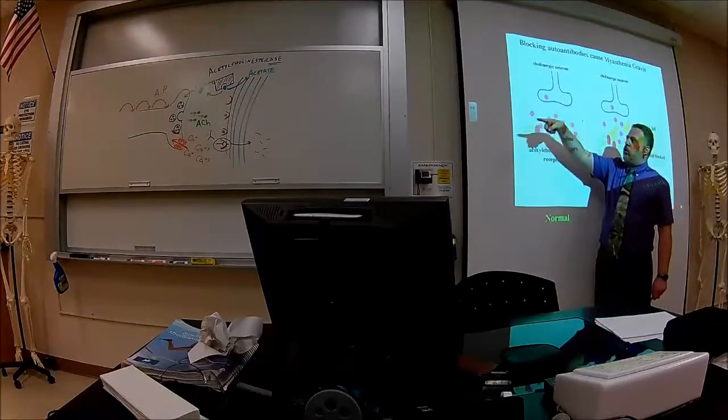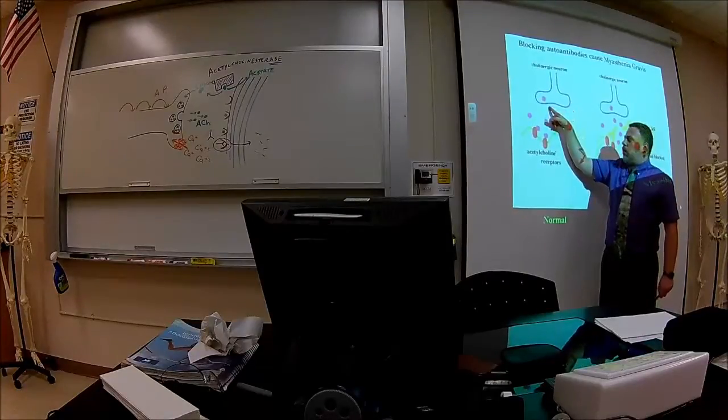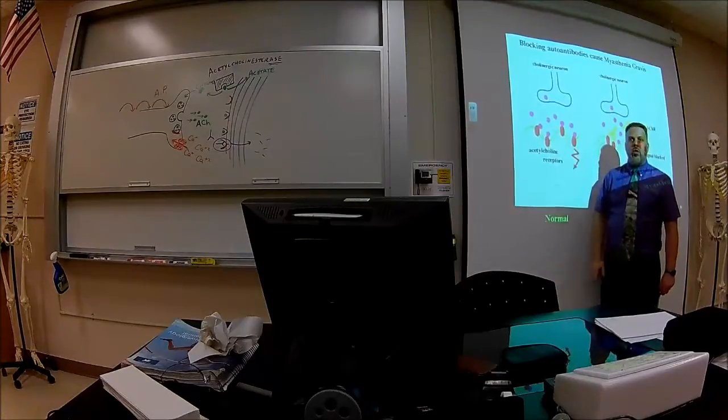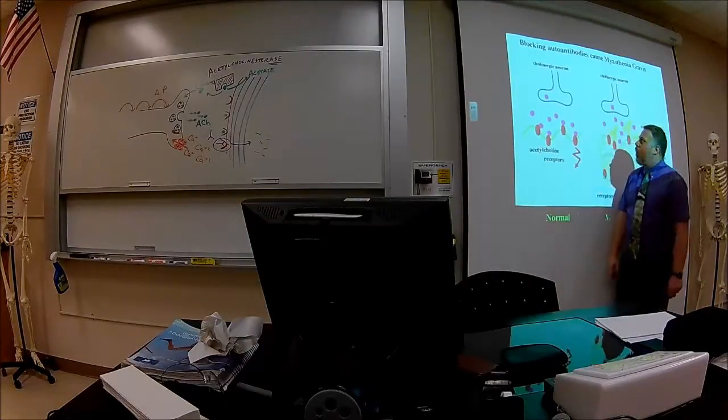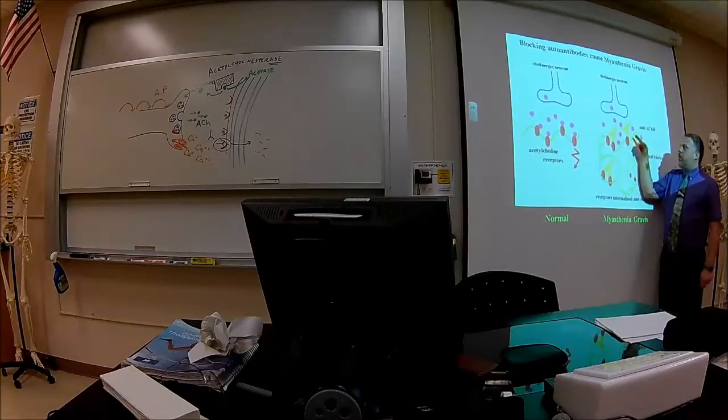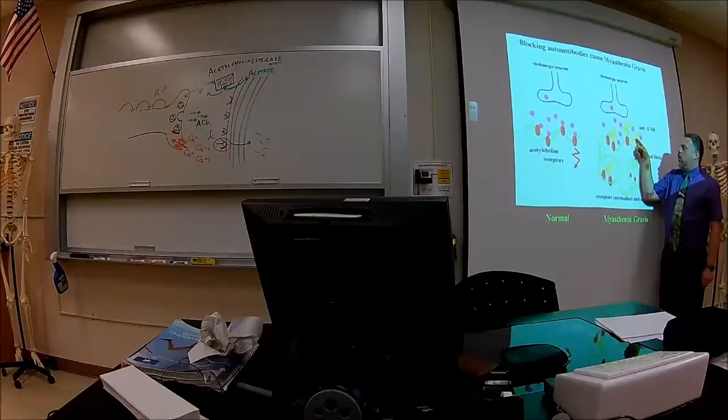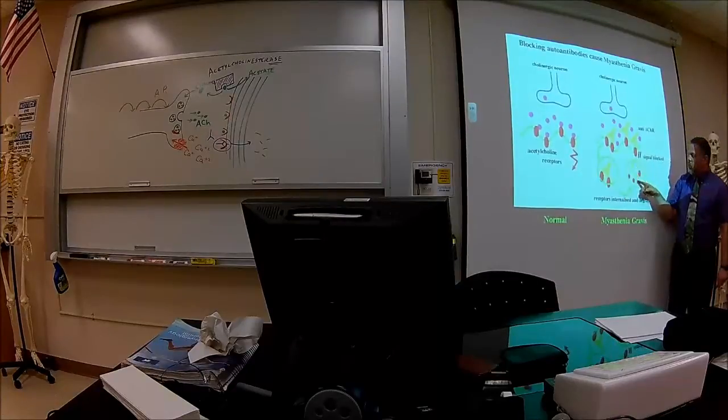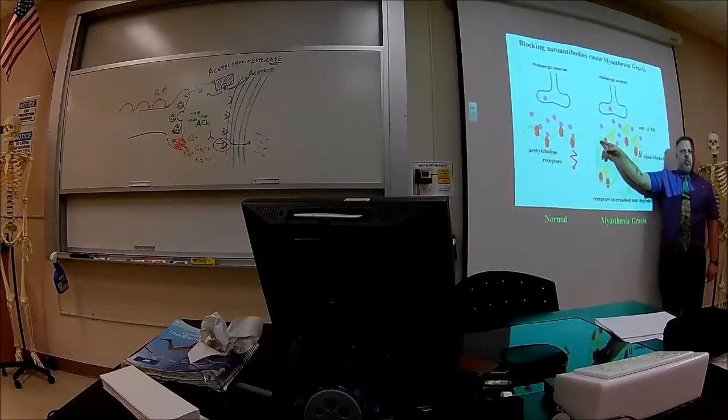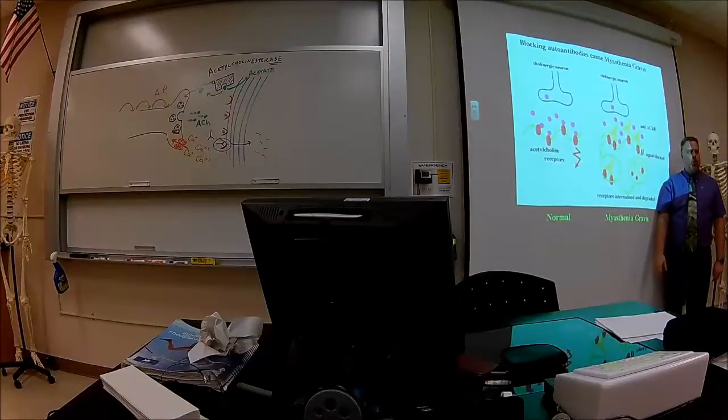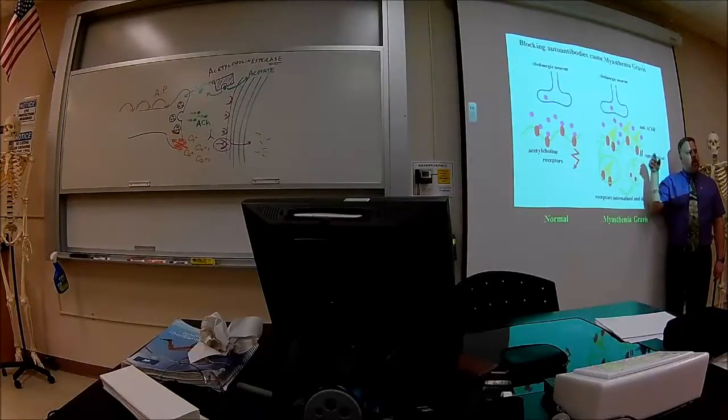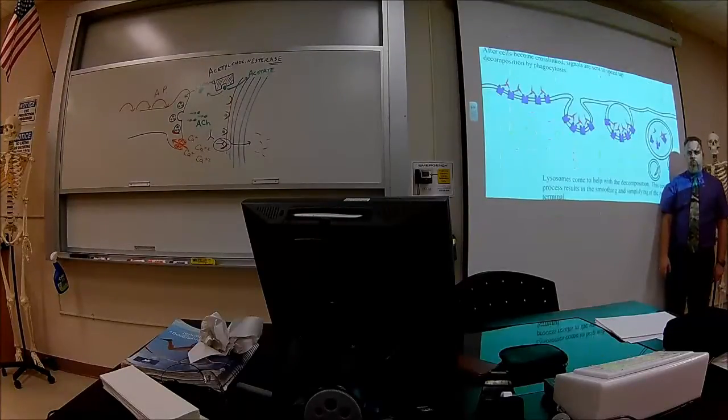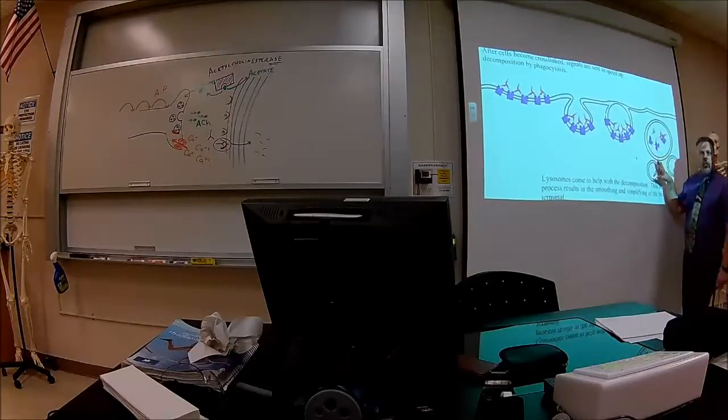This is what normally happens. You see it over there. Here's the axon terminal. These red things over here are the receptors for acetylcholine. These purple things are the acetylcholine. So it just gets internalized and they get destroyed inside.